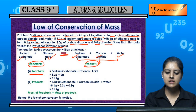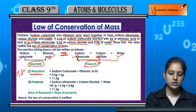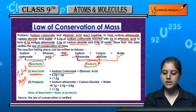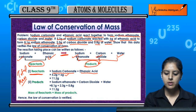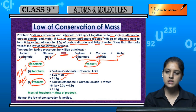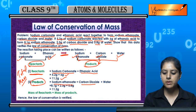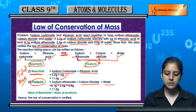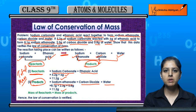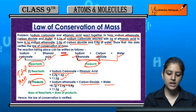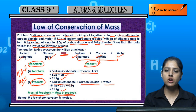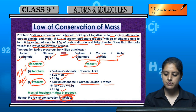Now let's calculate the total mass of reactants and products. Reactants: sodium carbonate plus ethanoic acid = 5.2 + 6 = 11.2 grams. Products: sodium ethanoate plus carbon dioxide plus water = 8.1 + 2.3 + 0.8 = 11.2 grams. The mass of reactants equals the mass of products, so the law of conservation of mass is verified.